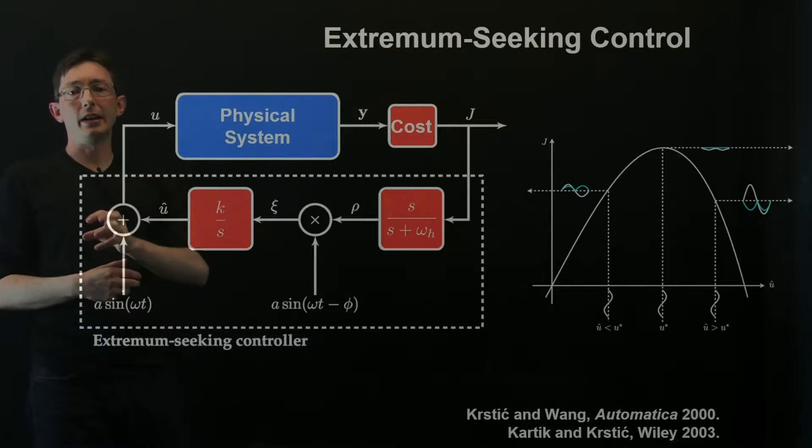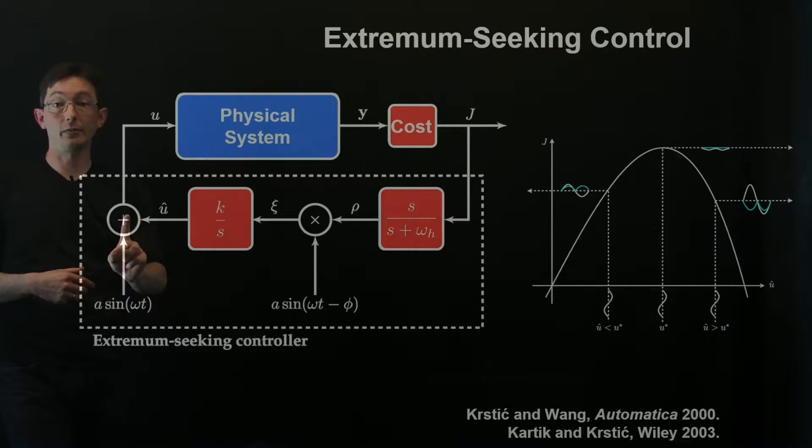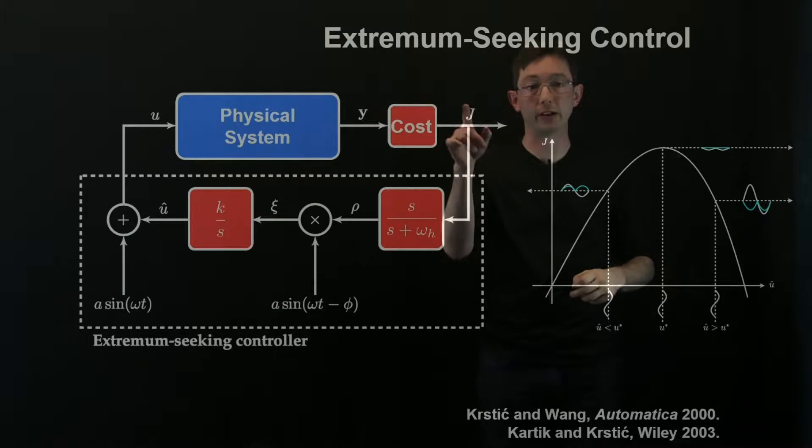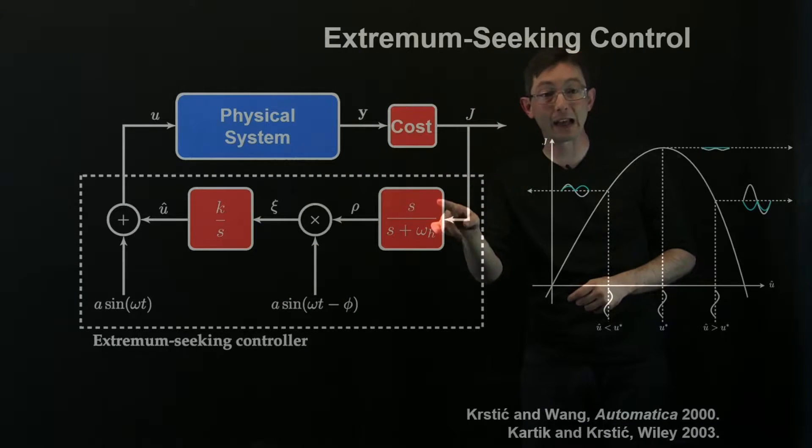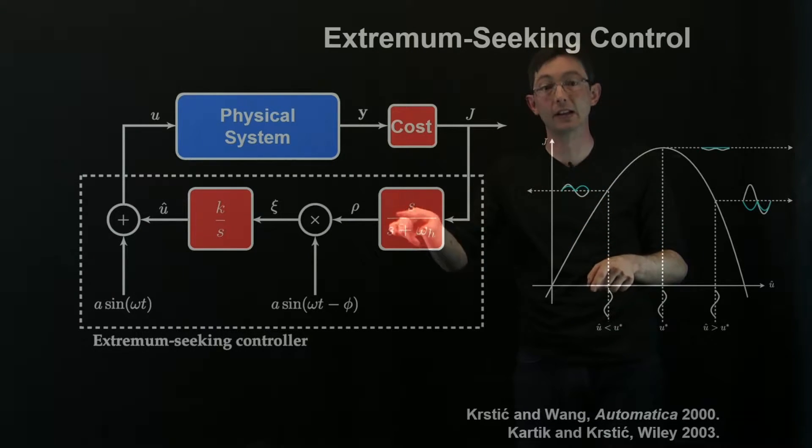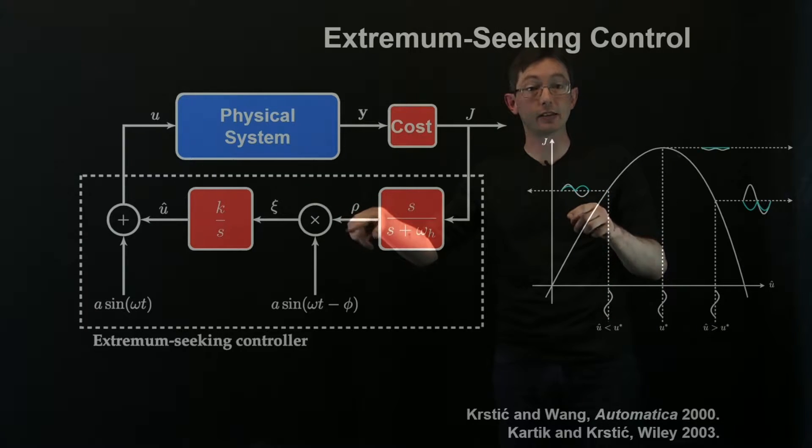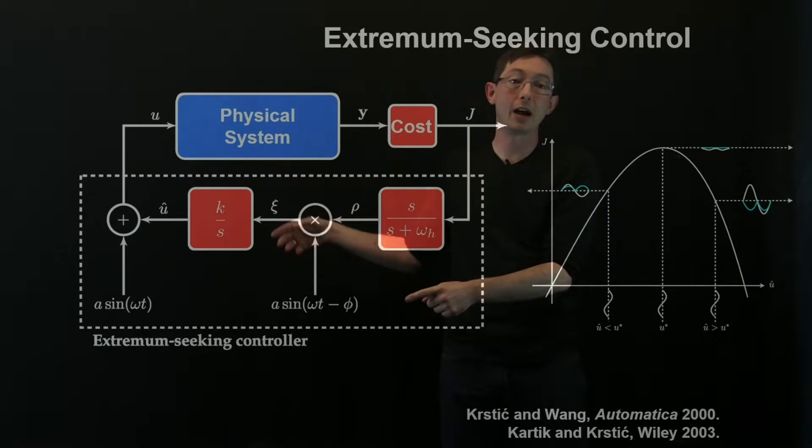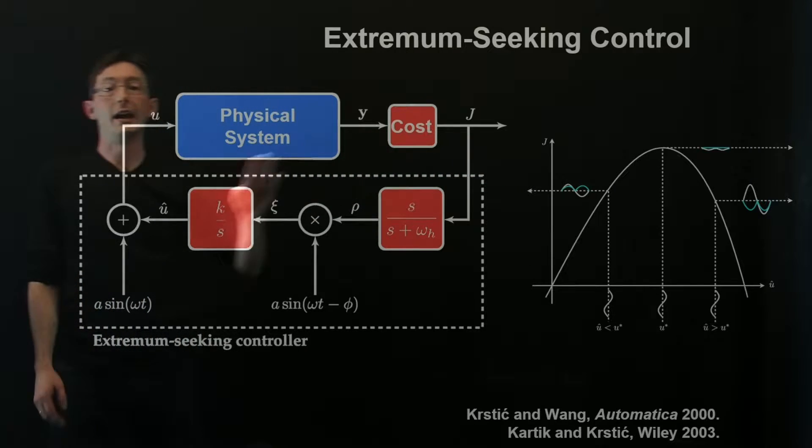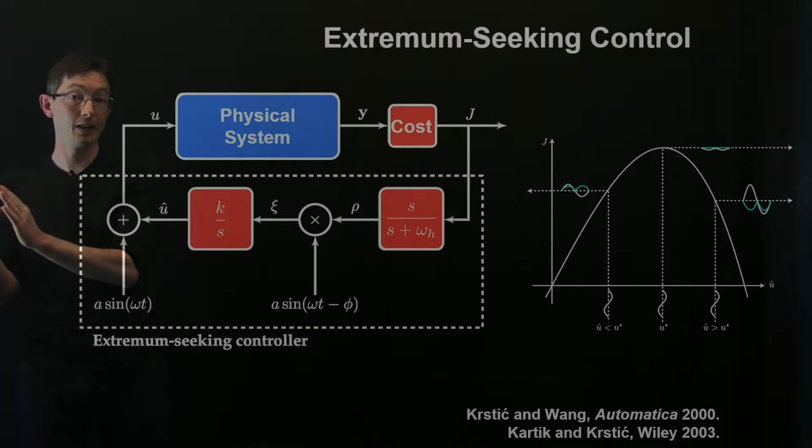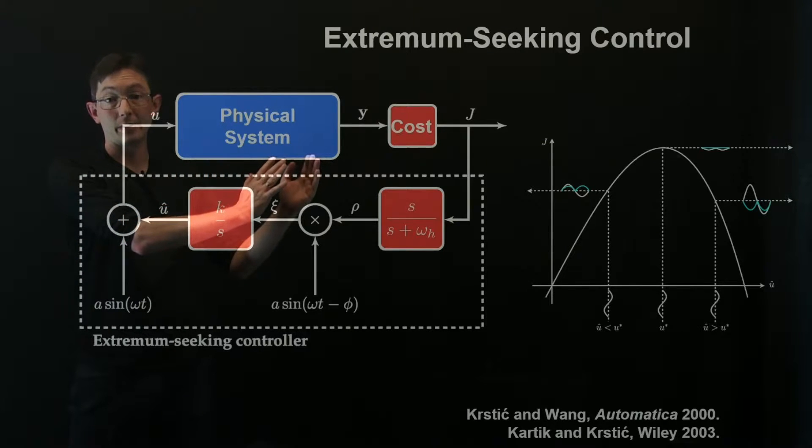Basically you put in this additional sinusoidal perturbation to your best estimate u hat, you get some corresponding sinusoidal output j, you have to high-pass filter that to get rid of the mean component, just to get the purely oscillatory part rho. You multiply that by your sinusoidal perturbation, possibly with a phase shift, that gives you this demodulated signal xi, and xi is the quantity that is more or less positive when I'm to the left of the optimum and negative when I'm to the right of the optimum.